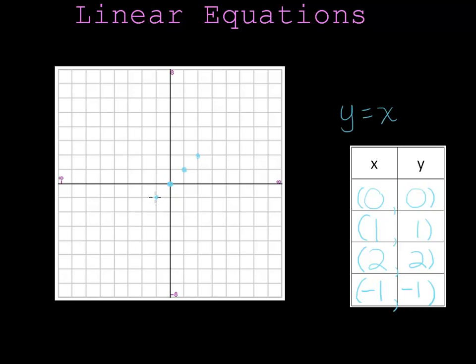Notice that my points are forming a straight line. So I can connect my points into a straight line. And I can actually extend my line all the way through the graph in both directions just by following the pattern that I see based on my first 4 points. So this is the graph of the line y is equal to x.